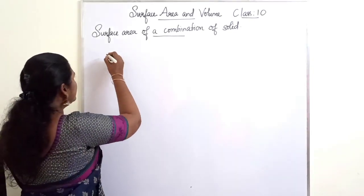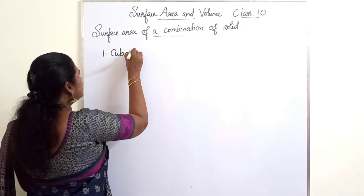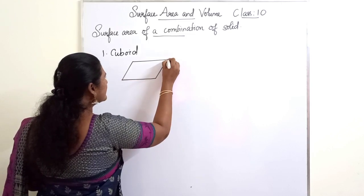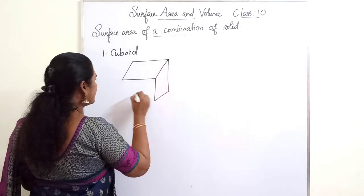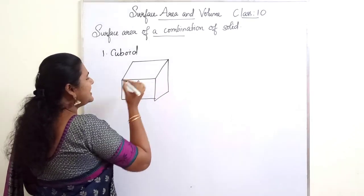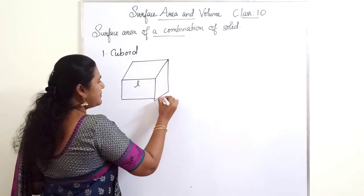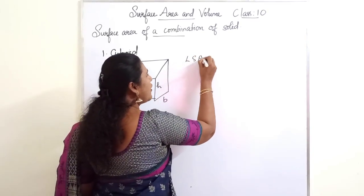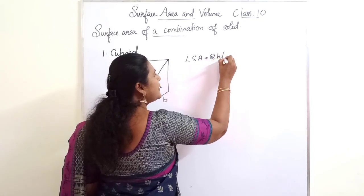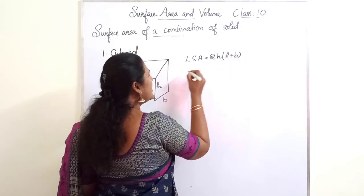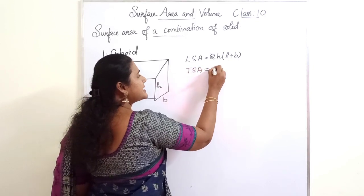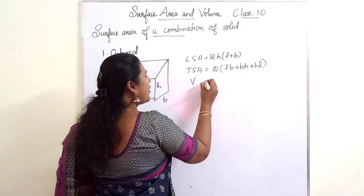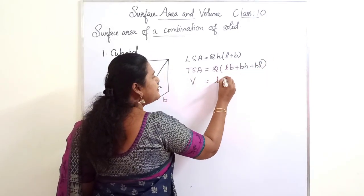So first we will start with the solid cuboid. Suppose L is the length of the cuboid, B is the breadth, and H is the height. The formula for lateral surface area is 2H into (L plus B). The formula for TSA is 2 into (LB plus BH plus HL), and the volume formula is L into B into H.